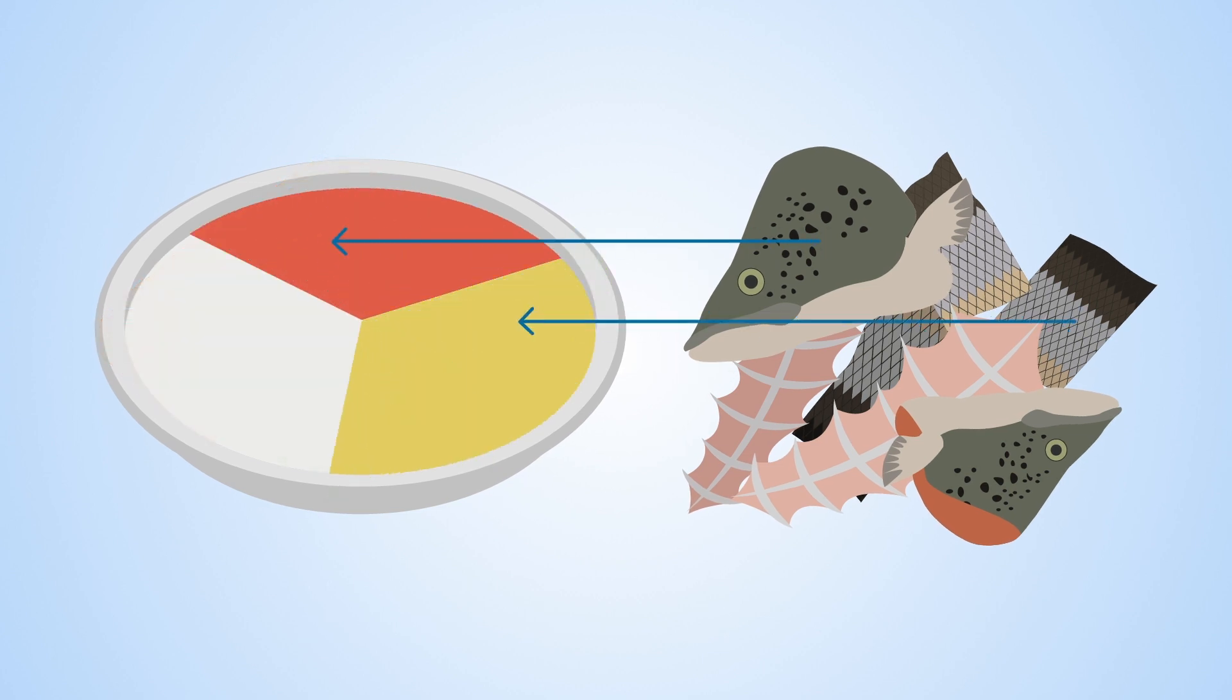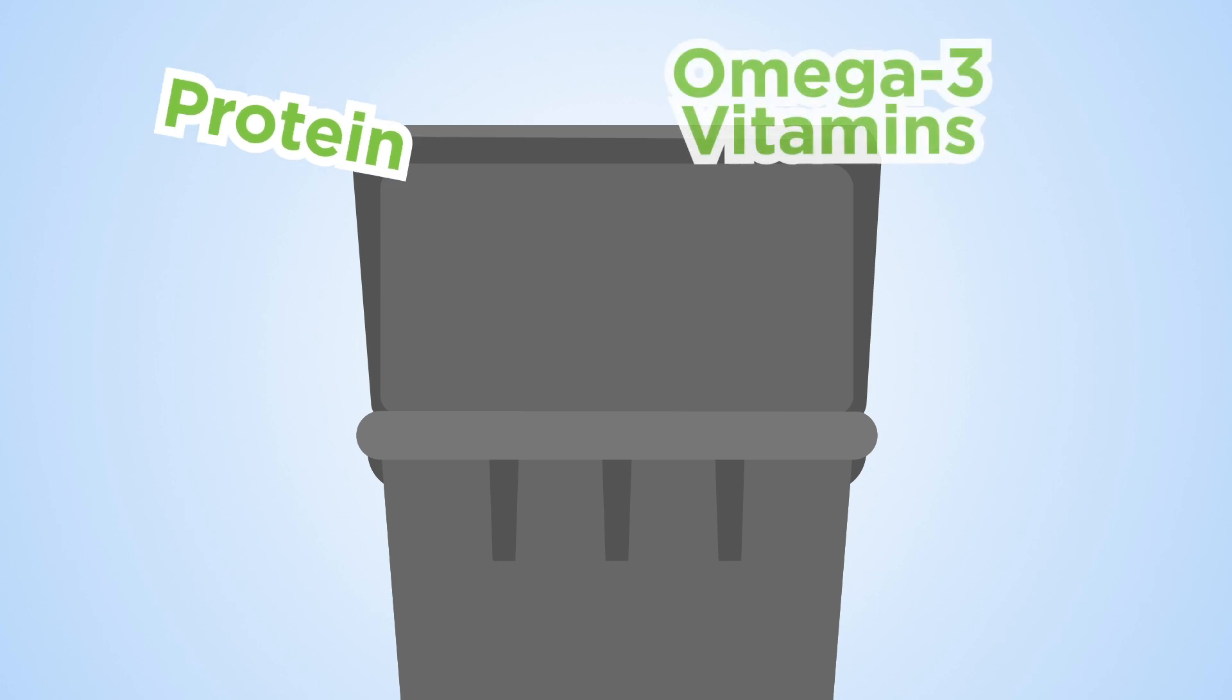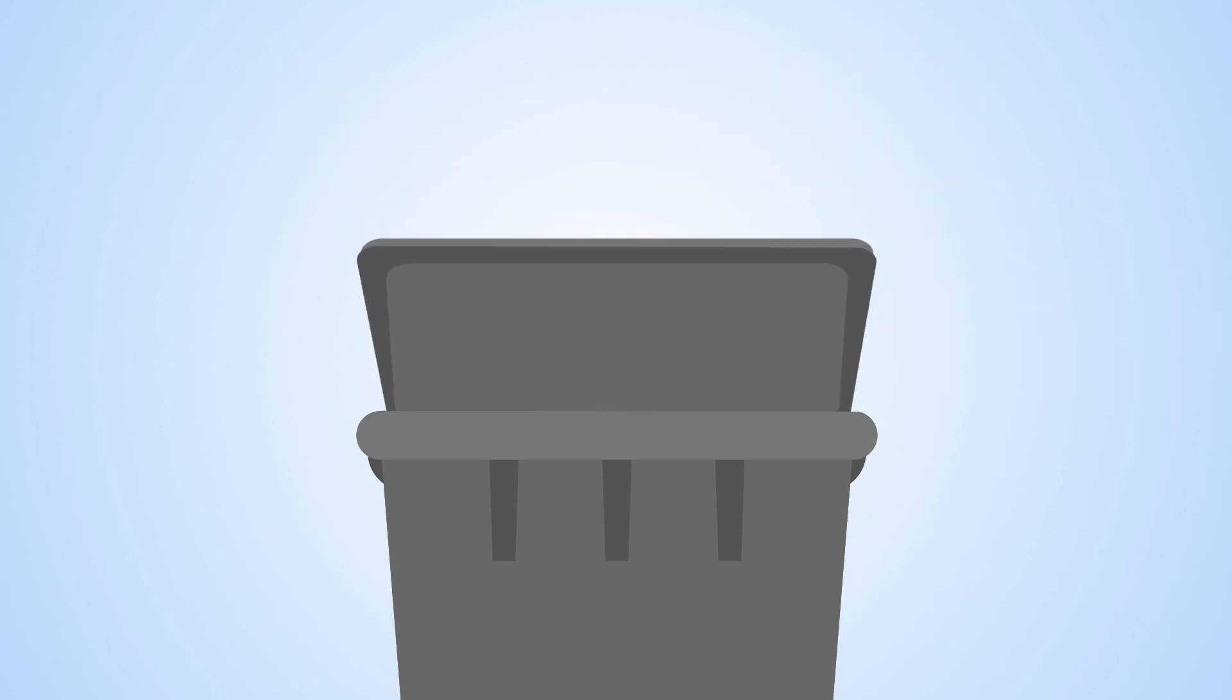Well, fish heads, skin and bones are considered non-edible side streams and are often discarded, even though they're rich in protein, omega-3s, minerals and other valuable nutrients.